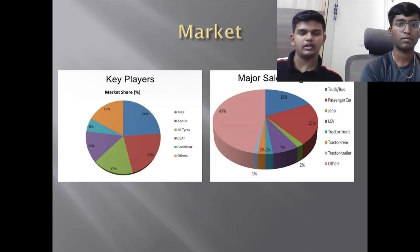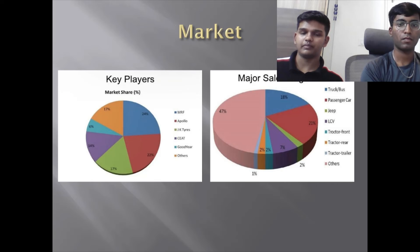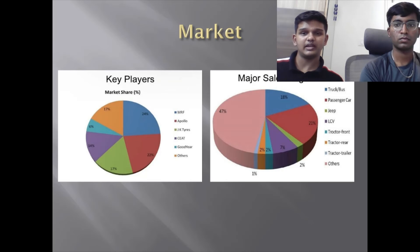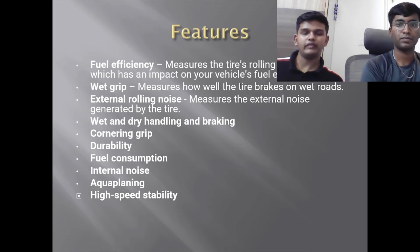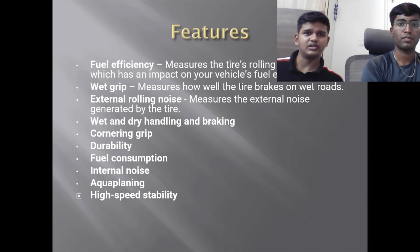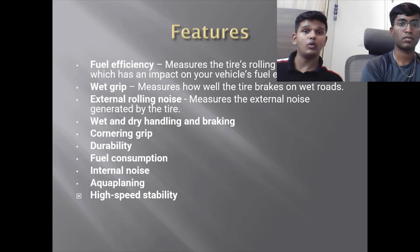When we talk about tyres, leading manufacturers include MRF, Apollo, CEAT, Goodyear, and many others. The major sales segment is for trucks and buses, passenger cars, jeeps, and LCVs. What we expect from tyres includes fuel efficiency, wet grip, and external rolling noise — fuel efficiency means measuring the tyre's rolling resistance, wet grip measures how well the tyre brakes on wet roads, and external noise measures the noise generated by the tyre.